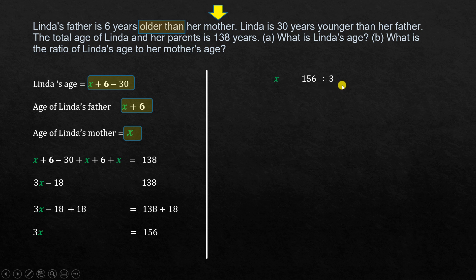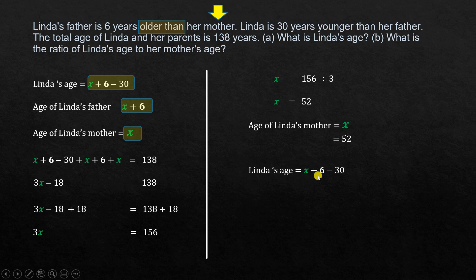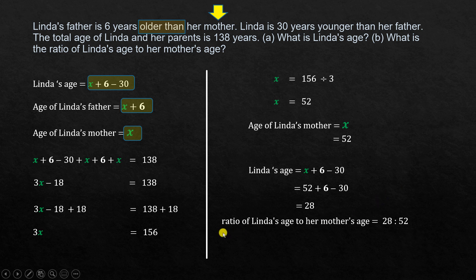So x equals 156 divided by 3, which is 52. Since x is Linda's mother's age, her mother is 52 years old. Linda's age is x plus 6 minus 30, so substituting: 52 plus 6 minus 30 equals 28. The ratio of Linda's age to her mother's age is 28 to 52, which simplifies to 7 is to 13.